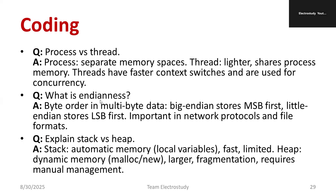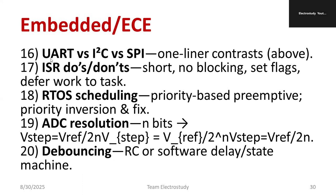What is endianness? It is byte order in multi-byte data. Big-endian stores the most significant byte first; little-endian stores the least significant byte first. This is important in network protocols. Stack versus heap: stack is automatic memory — fast and limited. Heap is dynamic memory. In summary, stack is automatic memory and heap is dynamic memory. Compare UART, I2C, and SPI: study the differences. For ISR dos and don'ts: keep it short, no blocking, set a flag, etc.